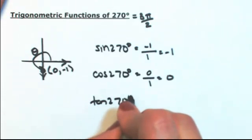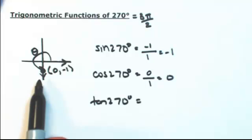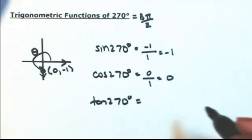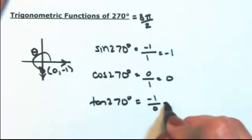Tangent of 270 degrees, opposite over adjacent. So the opposite is going to be negative 1. The adjacent is going to be zero. So that's undefined.